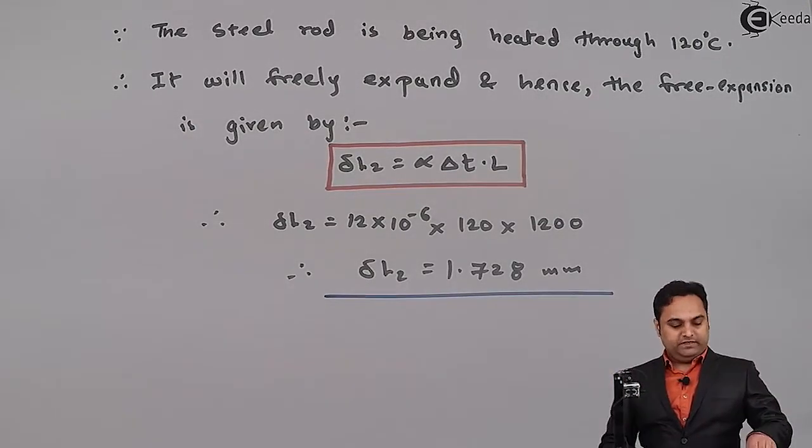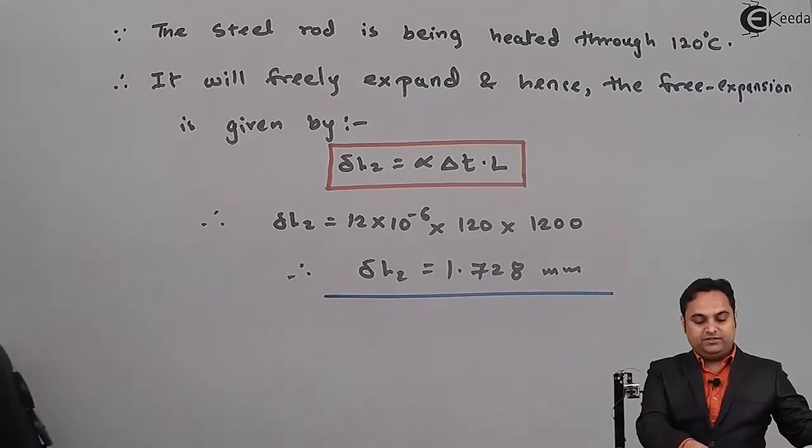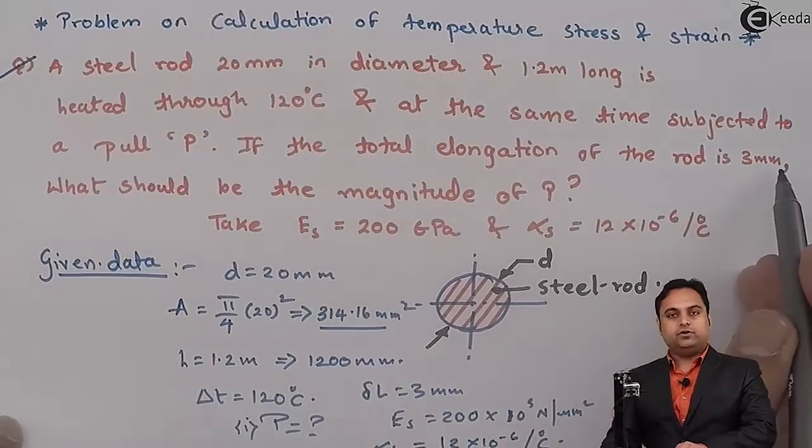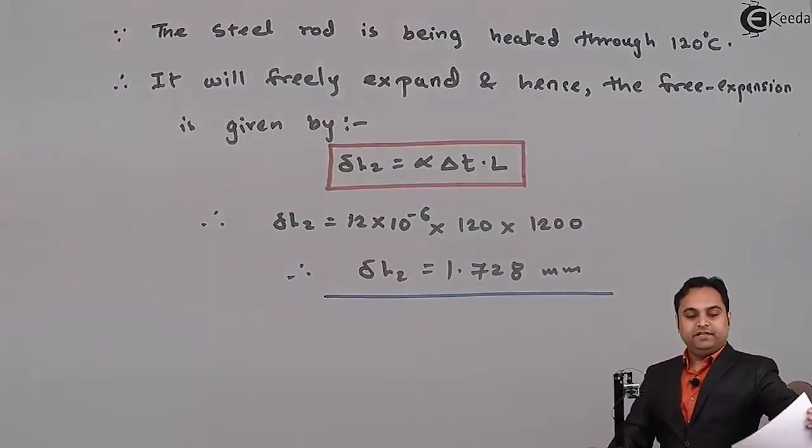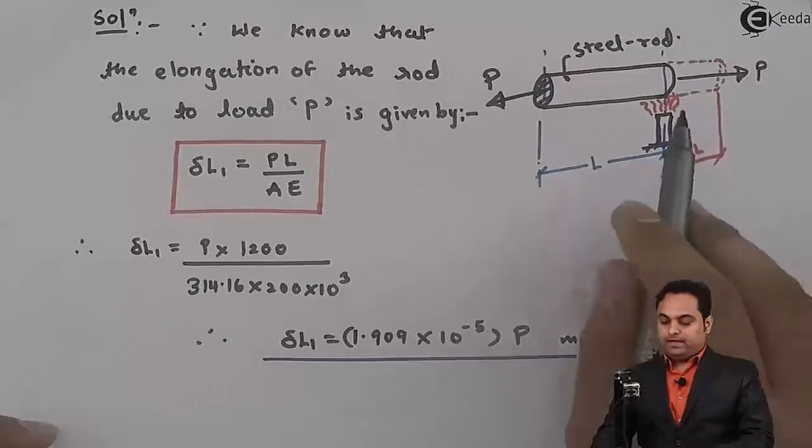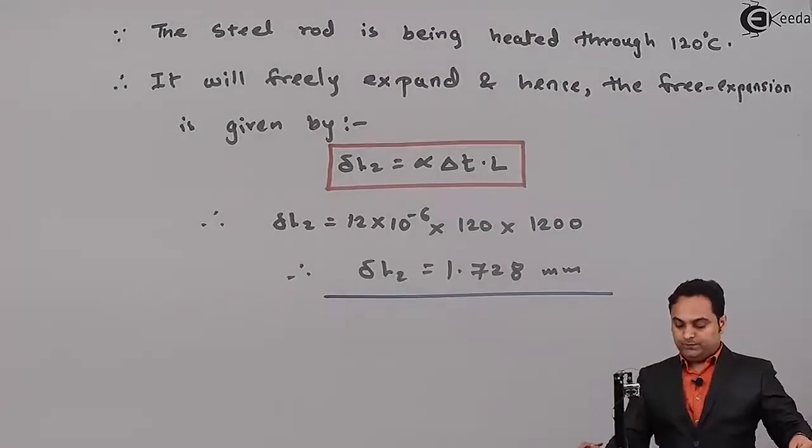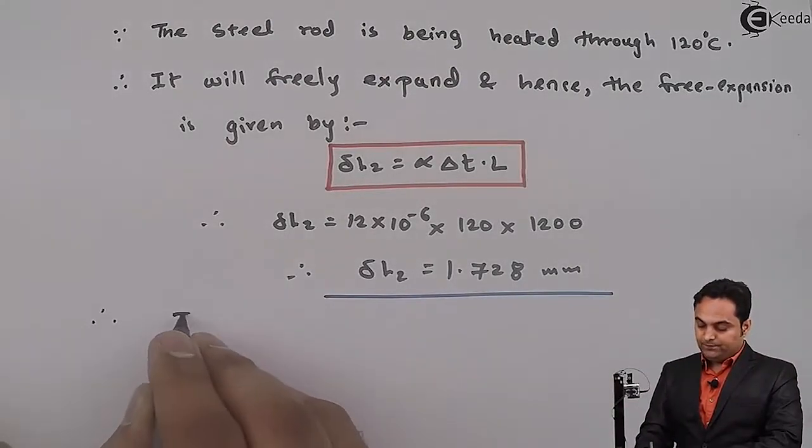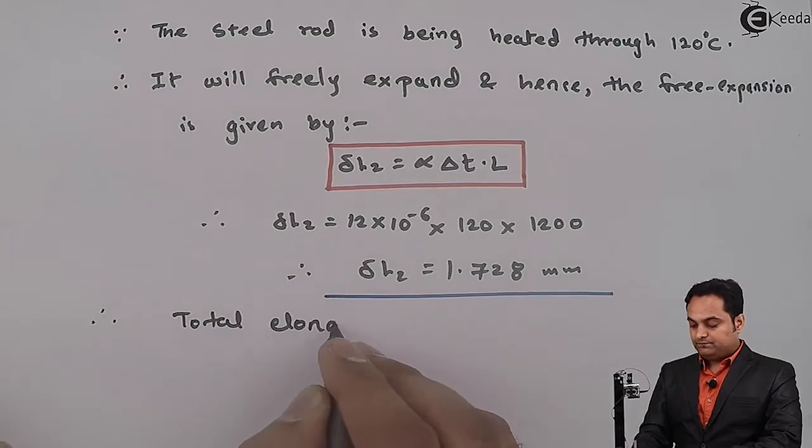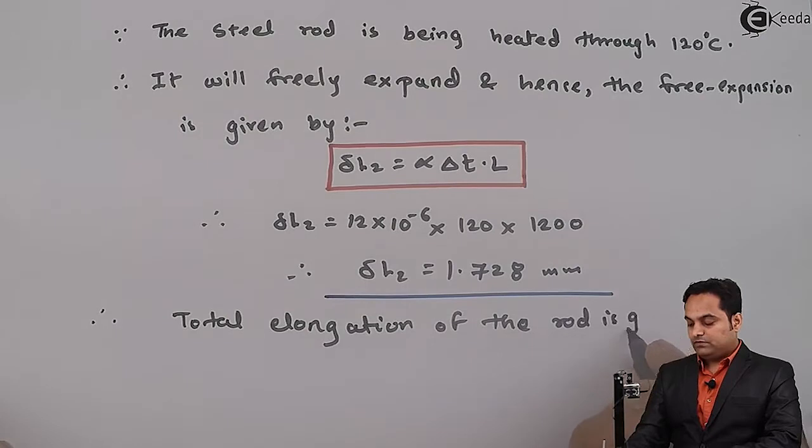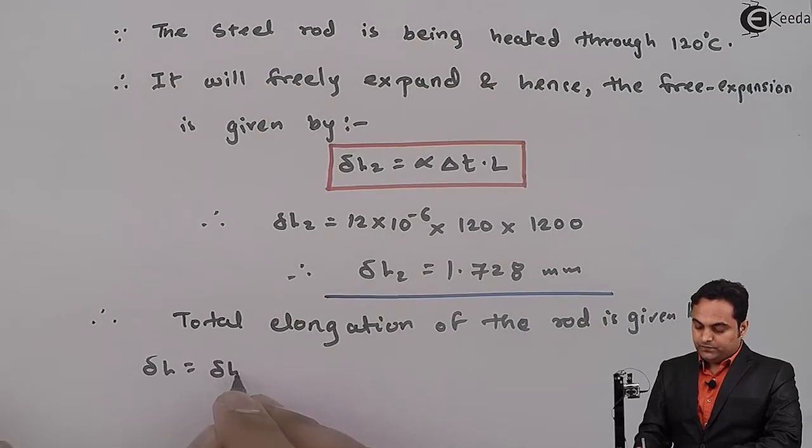After getting delta L1 and delta L2, we see in the problem that if the total elongation of the rod is 3 mm, so because of heating and because of the application of pull type of load, there is total elongation. And so therefore, total elongation of the rod is given by delta L is equal to delta L1 plus delta L2.